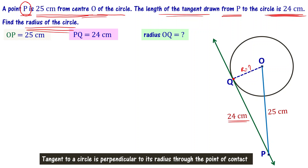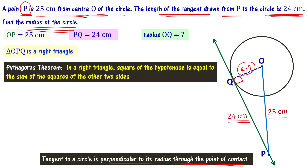The tangent to a circle is perpendicular to its radius through the point of contact — this is a theorem. So angle Q is 90 degrees, meaning triangle OPQ is a right-angle triangle. We know two sides and need to find the third. By the Pythagorean theorem, the square of the hypotenuse equals the sum of the squares of the other two sides.